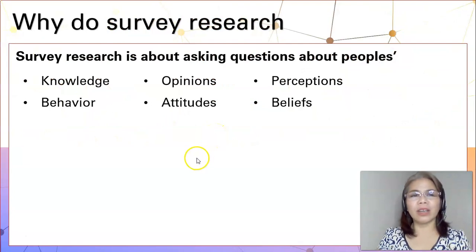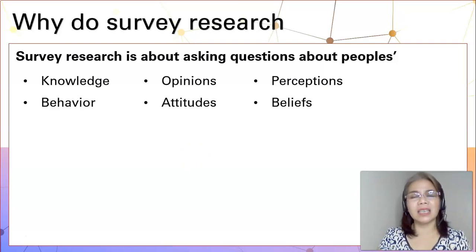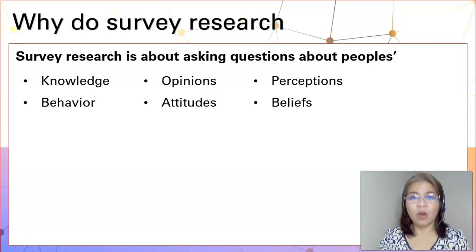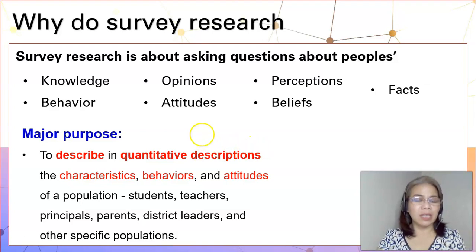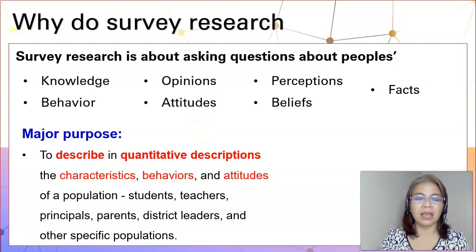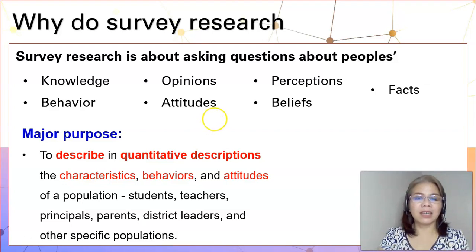Maybe some of you are curious to know why do we do survey research? Survey research is basically asking people about their knowledge, behavior, opinions, attitudes, perceptions, beliefs, or we are also interested to discover facts. The major purpose of doing survey research is to describe in quantitative descriptions the characteristics, behaviors, and attitudes of a population. And this population could be students, teachers, principals, parents, district leaders, and other specific populations.